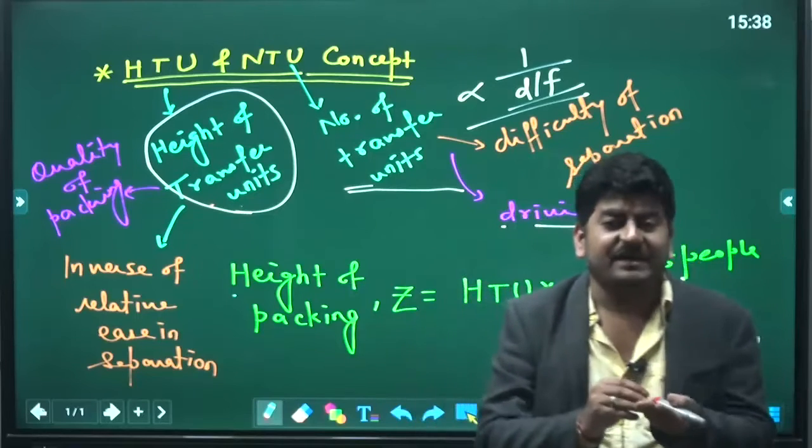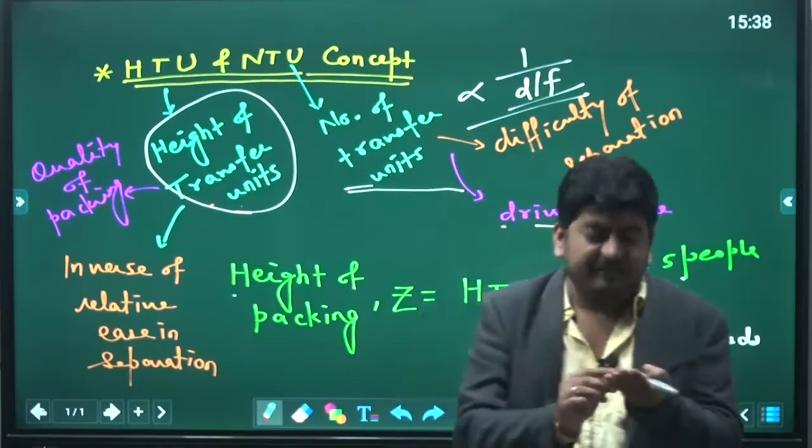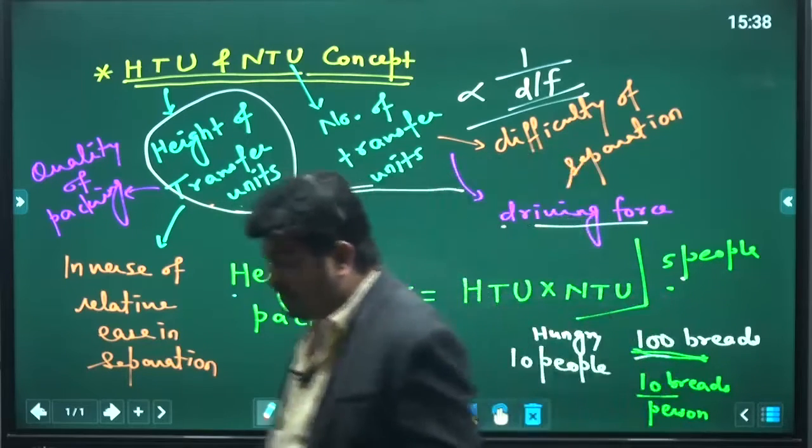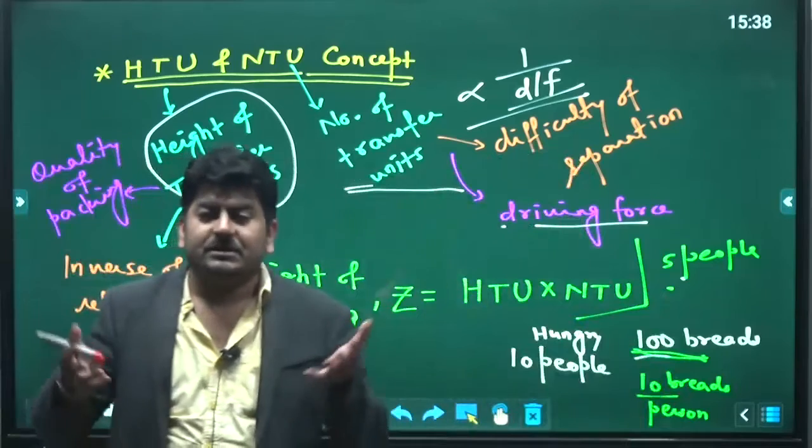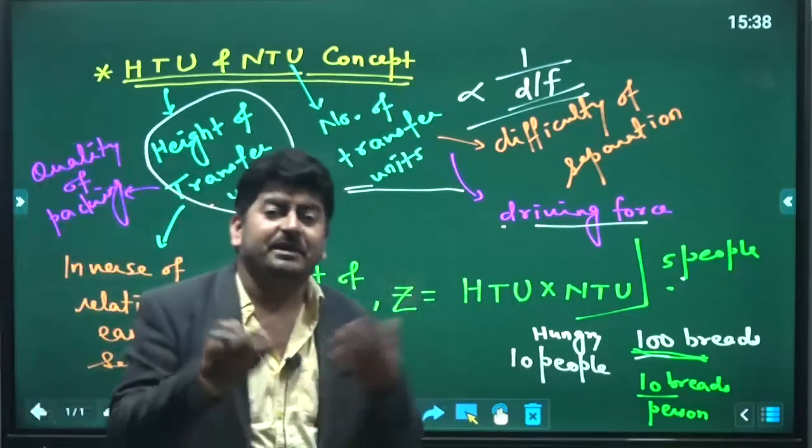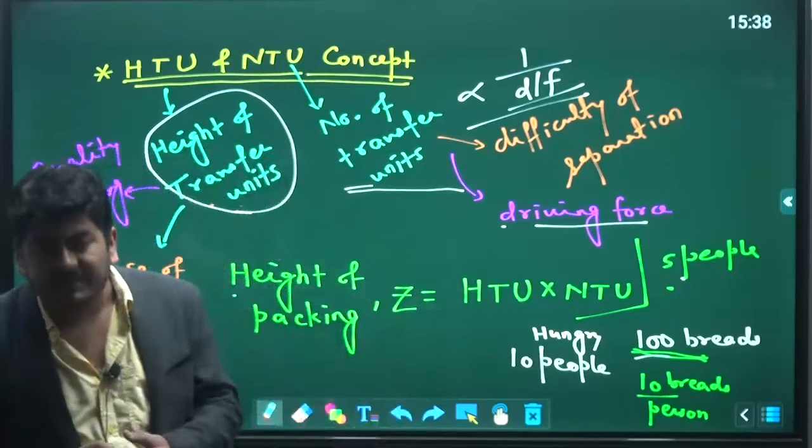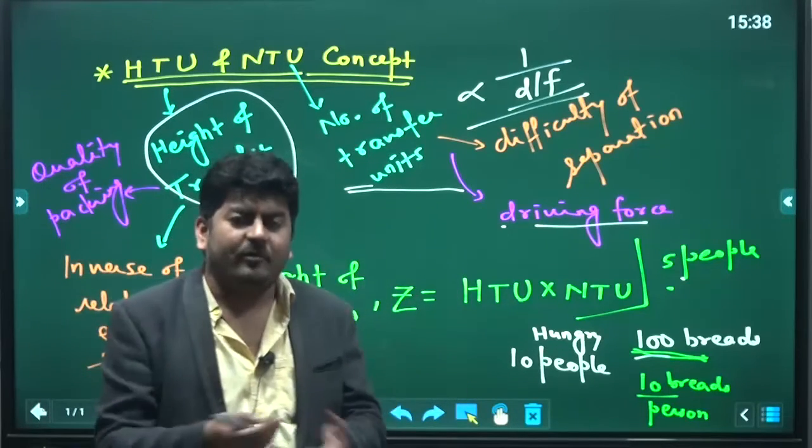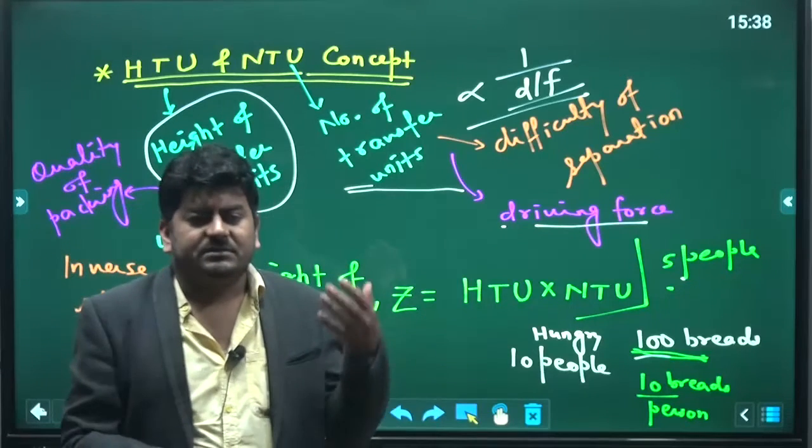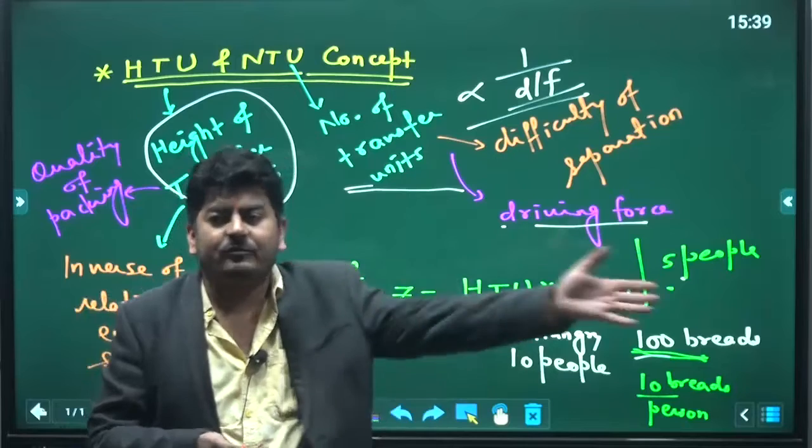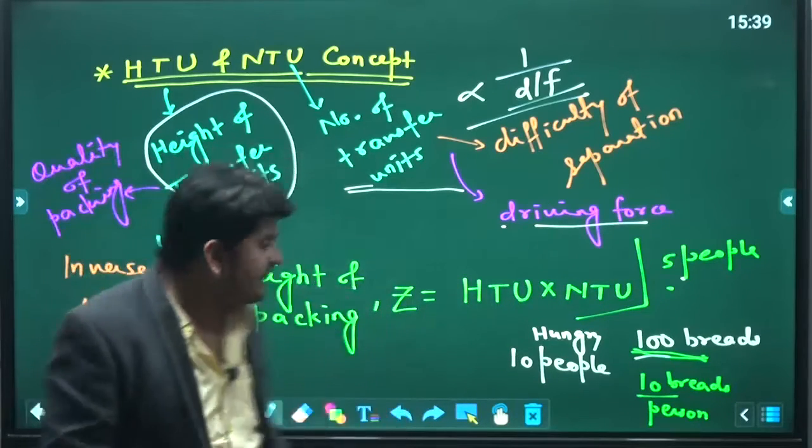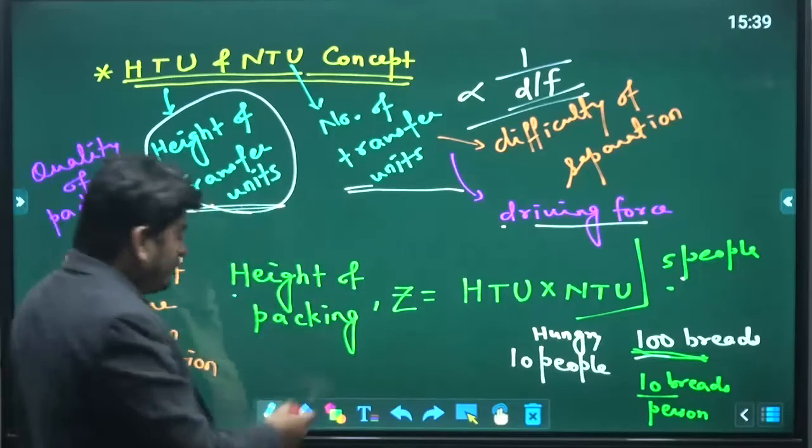Similarly, first we will see the quality of packing. Here we are using a packing where the packing is going to provide the interfacial area. So first we will check the interfacial area - that was the requirement. If your packing is not going to provide you the desired interfacial area, the large interfacial area, then obviously packing is not of good quality. Then why will you check for the driving force or anything else?